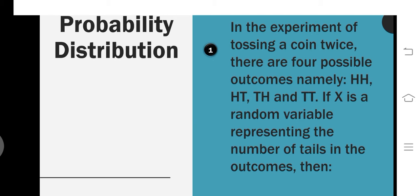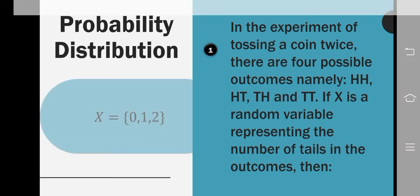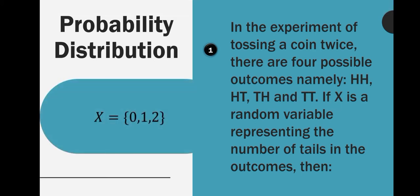In the experiment of tossing a coin twice, there are four possible outcomes: head-head or two heads, head-tail, tail-head, and two tails. If x is a random variable representing the number of tails in the outcomes, then x contains 0, 1, and 2.